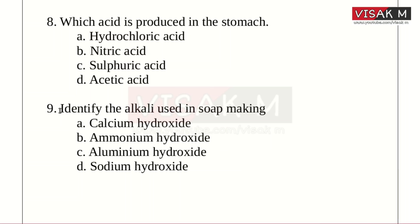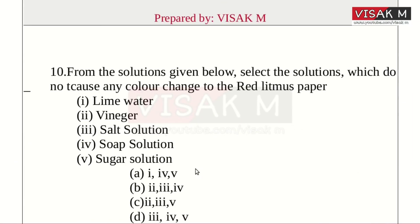Eighth: Identify the alkali used in soap making. Option A: Calcium Hydroxide. B: Ammonium Hydroxide. C: Aluminium Hydroxide. D: Sodium Hydroxide. The right answer is D, Sodium Hydroxide — NaOH is the alkali used in soap making.